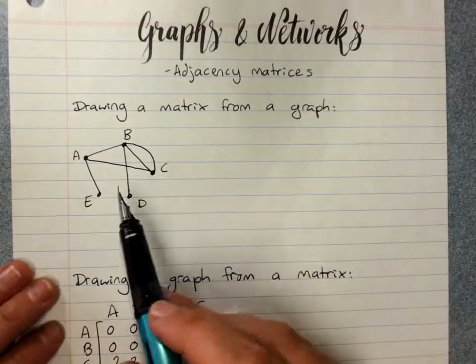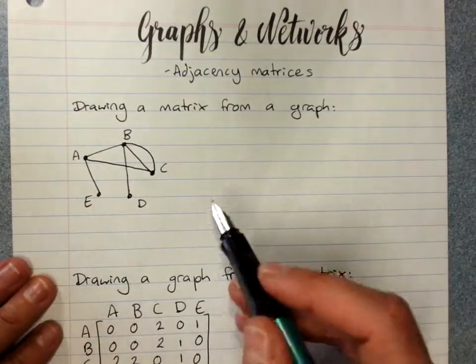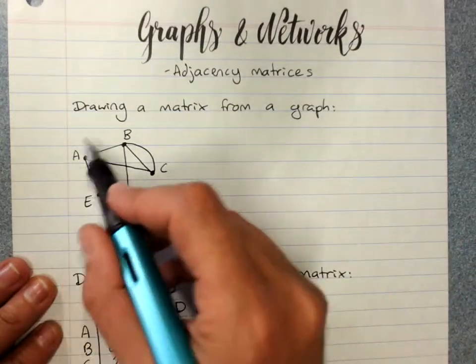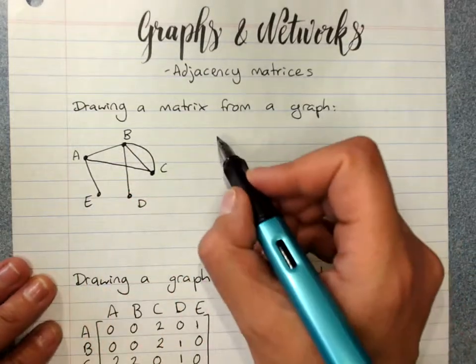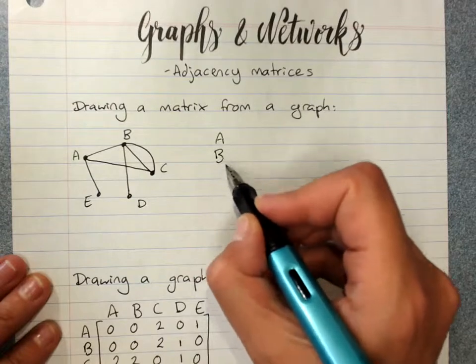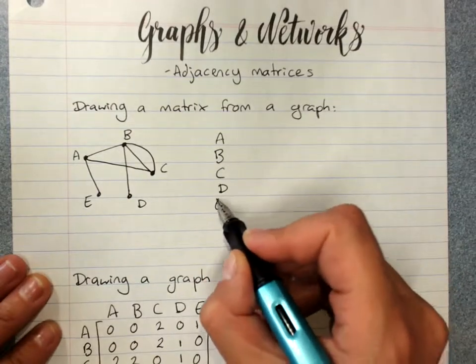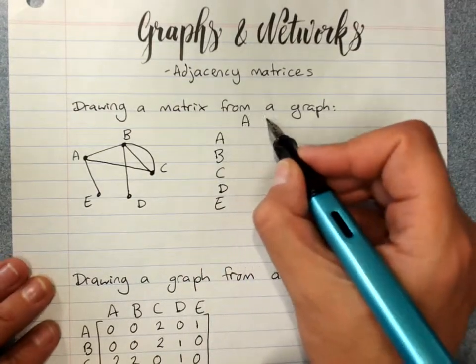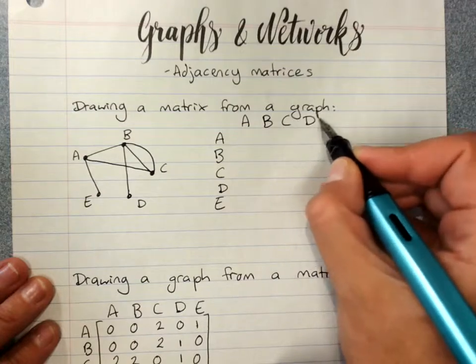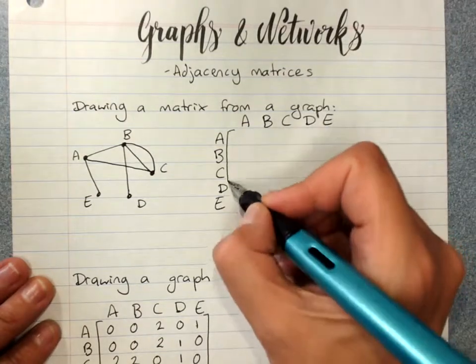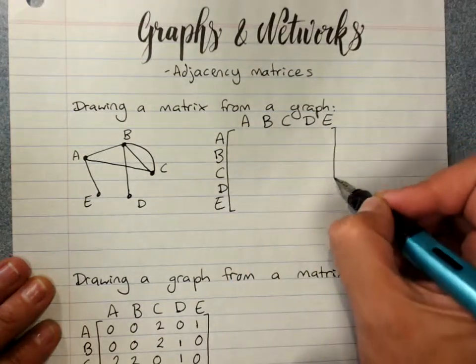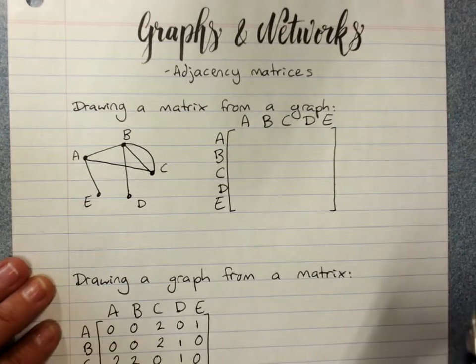So the adjacency matrix records the number of connections between vertices of a graph. You need to have each vertex in each of the rows and in each of the columns and make your little matrix like that.